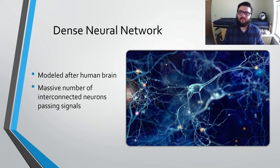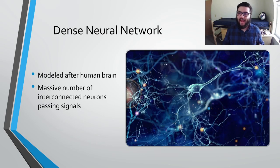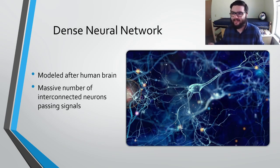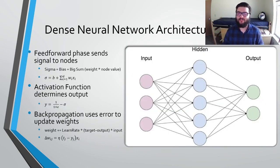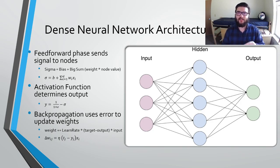Now we're going to talk about each of those pieces in more depth, starting with the dense neural network. Dense neural networks are actually modeled after how our brain works. Our brain is composed of a massive number of interconnected neurons. When one neuron fires, it sends a signal to thousands of other neurons, and if one of those neurons gets a strong enough signal, it fires and sends a signal to thousands more. Our brain is essentially just an interconnected web of these neurons firing. We replicate that behavior in machine learning using dense neural networks, which are made up of layers of nodes where each node in a layer is connected to all of the nodes in the previous layer.